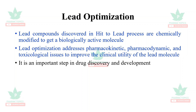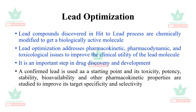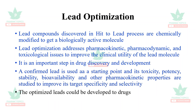Lead optimization is an important step in drug discovery and development. A confirmed lead is used as a starting point, and its toxicity, potency, stability, bioavailability, and other pharmacokinetic parameters are studied to improve its target specificity and selectivity. The optimized leads can then undergo further stages of drug development.